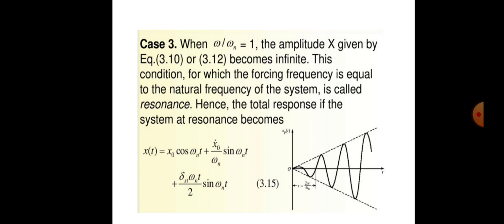At resonance, the total response of the system becomes: x(t) = x₀ cos(ωₙt) + (ẋ₀/ωₙ) sin(ωₙt) + (δₛt · ωₙt / 2) sin(ωₙt). This graph shows that when the excitation frequency and natural frequency become equal, the amplitude of oscillations becomes greater compared to normal conditions.